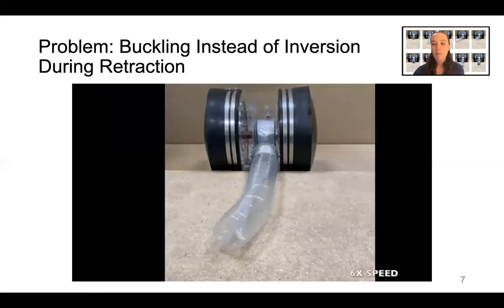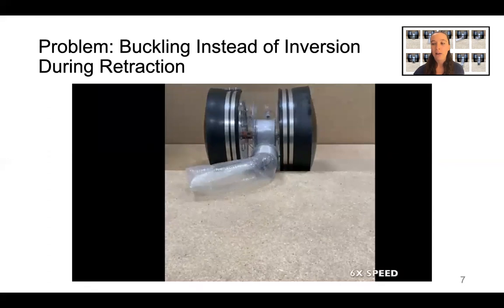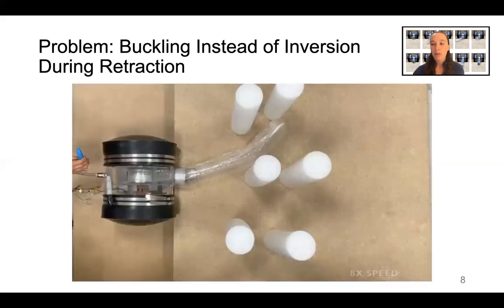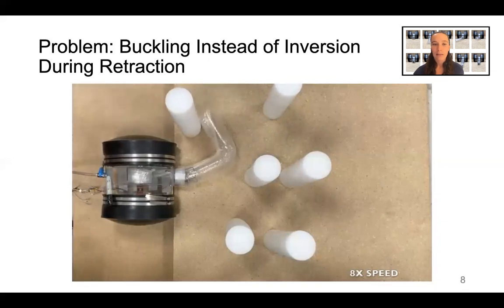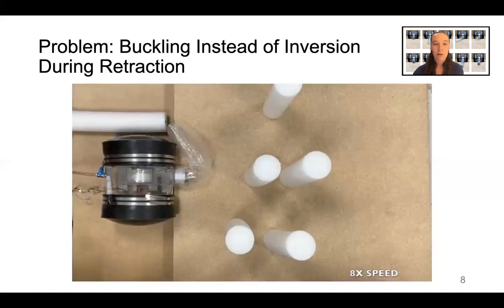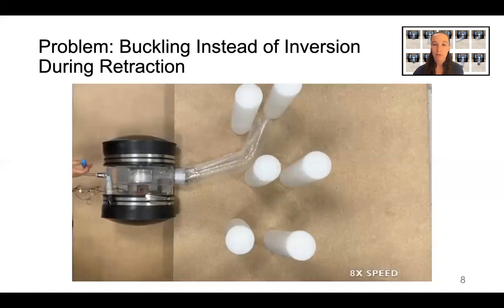However, a problem that greatly decreases the practicality and usability of these robots is their tendency to buckle rather than invert successfully during retraction when their inner material is pulled back from the base. This undesired buckling causes lack of control over both the robot tip position and the force applied to the environment. Here you see the robot unwontedly knocking over an obstacle in the environment.